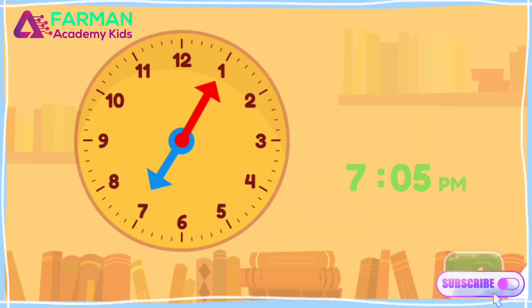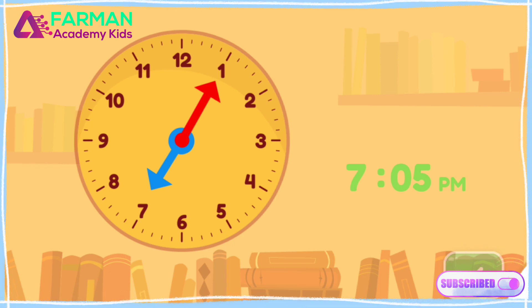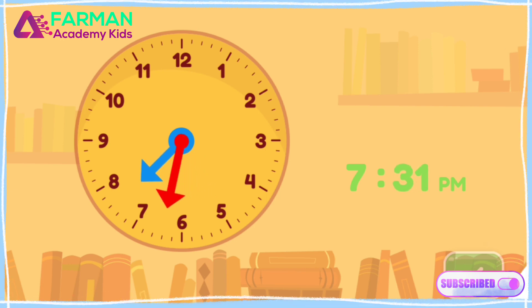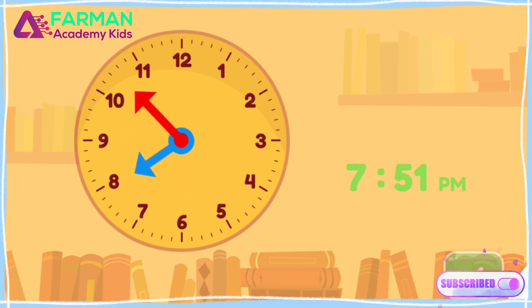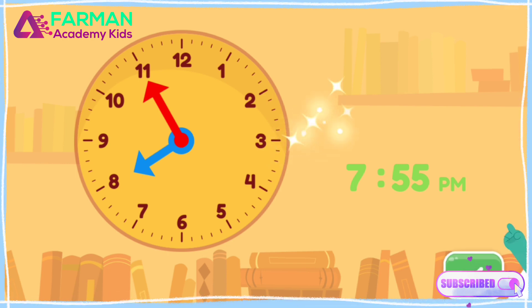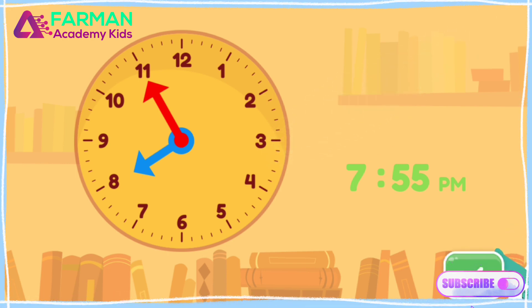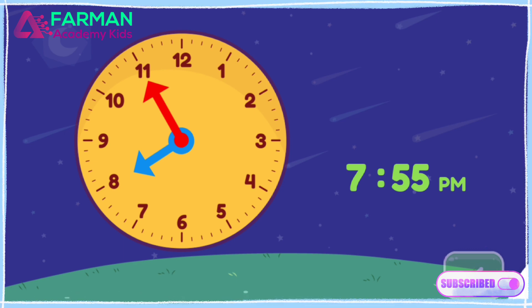Move the minute hand on the round clock to show 7:55 p.m. You made the clock show 7:55 p.m. It's time to read in my cozy room.